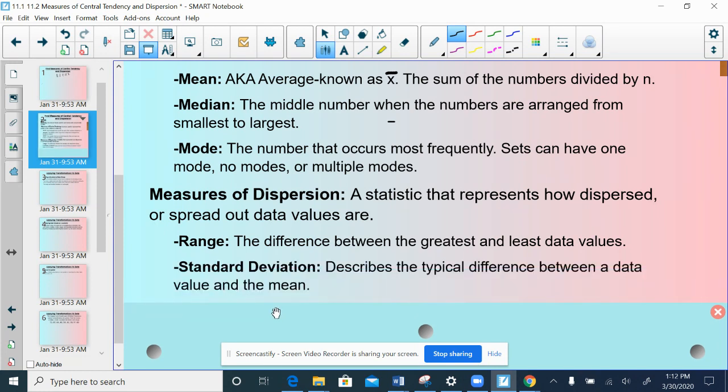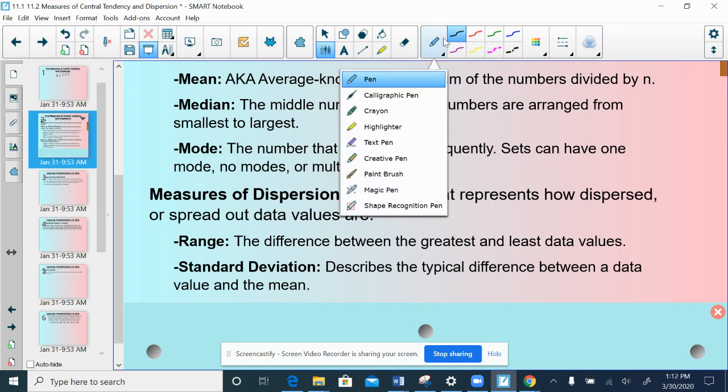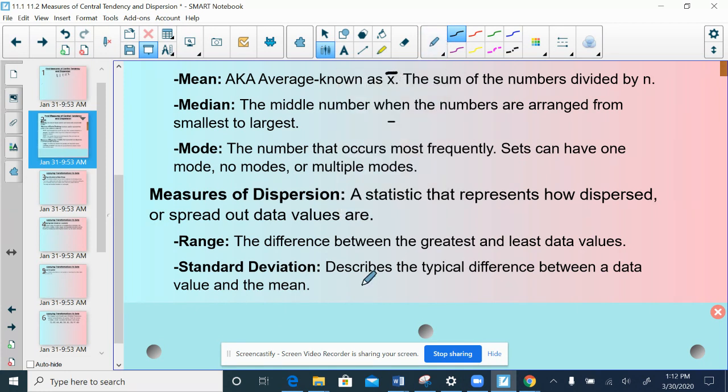We also have a term called the standard deviation. We'll use the standard deviation starting in section 11.3, but we want to discuss how to calculate it. First, the notation for standard deviation is σ (sigma), which looks like an O with a little squiggle. That's our notation for standard deviation.